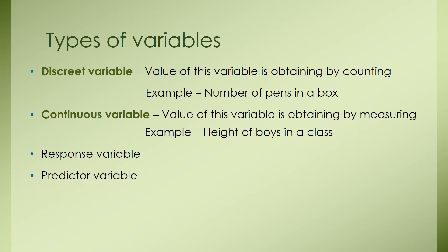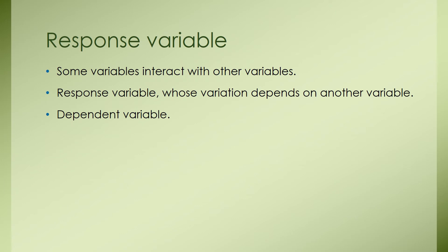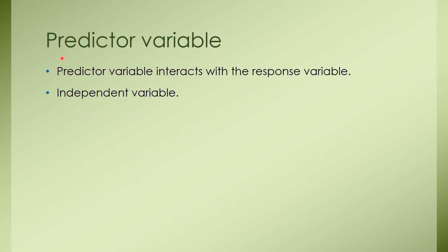Response and predictive variable I will explain in detail later. Some variables interact with other variables. For example, response variable, whose variation depends on another variable. Because of that, response variable is known as dependent variable. Next variable is predictive variable. So predictive variable influences or interacts with the response variable. And also, the researcher has a chance to change the predictive variable. Because of that, predictive variable is also known as independent variable.